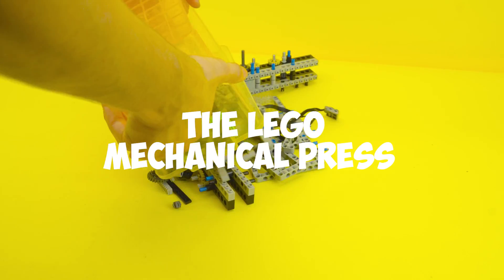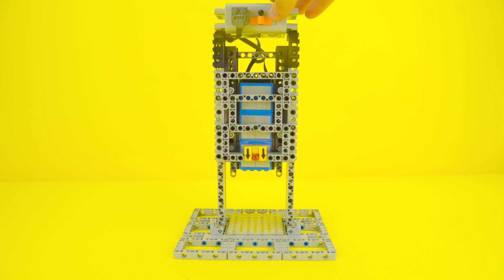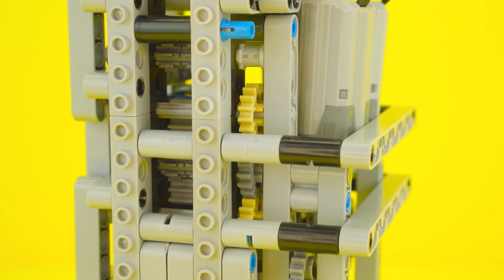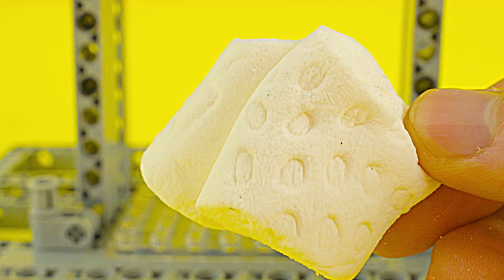Experiment 3: The Lego Mechanical Press. For our third experiment, we're building a Lego press that can exert significant pressure. Using two motors and a worm gear, this press is simple yet powerful. We'll start with something soft, like marshmallows, which end up with some gnarly marks. Anyone who's stepped on a Lego brick will know the feeling.